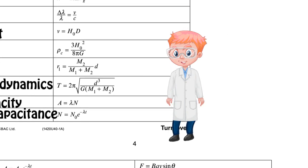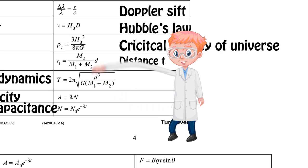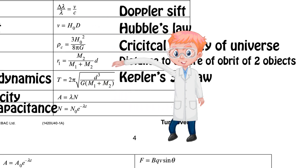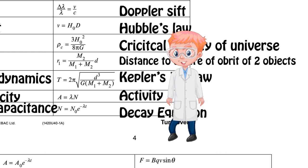The final five here are for space. We've got Doppler shift, the critical density of the universe, Kepler's third law for two bodies where the centre of rotation is not within one of them. The final two here are for unit 3 and relate to nuclear physics: our definition for activity and our decay rate.